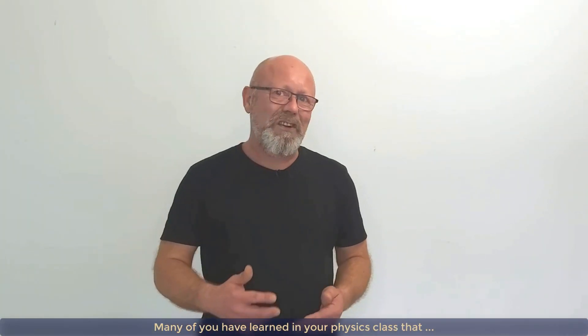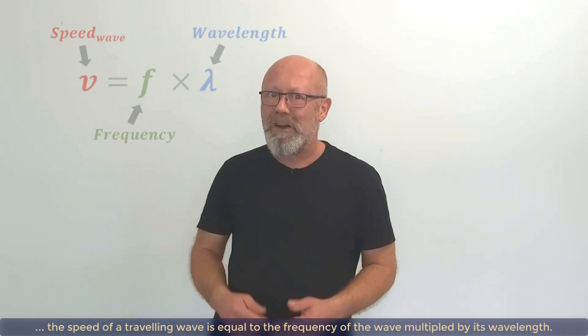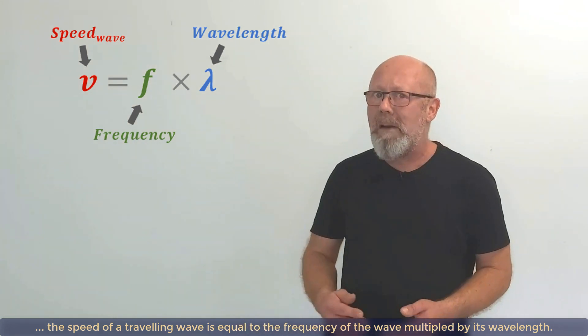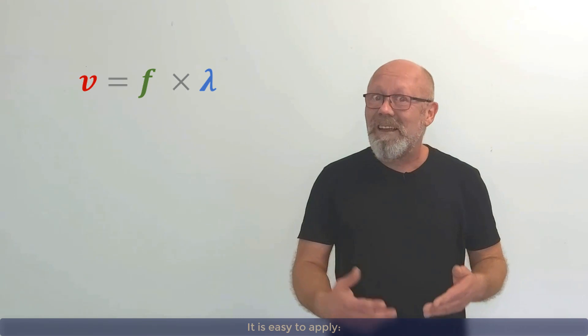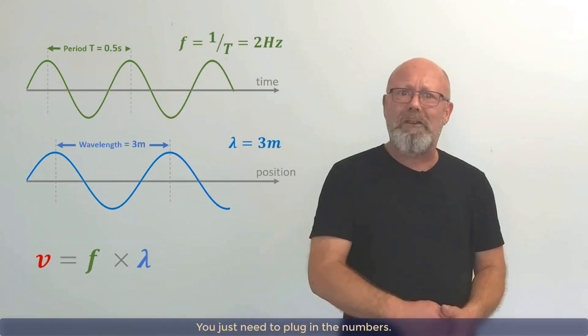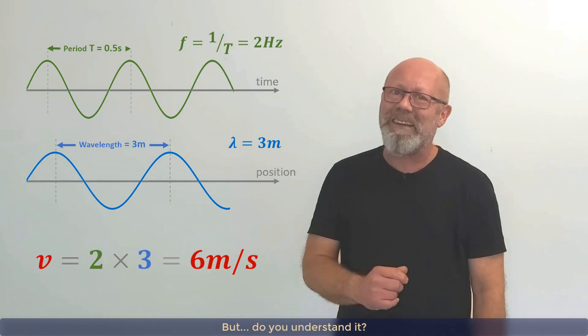Many of you have learned in your physics class that the speed of a traveling wave is equal to the frequency of the wave multiplied by its wavelength. It is easy to apply. You just need to plug in the numbers. But do you understand it?